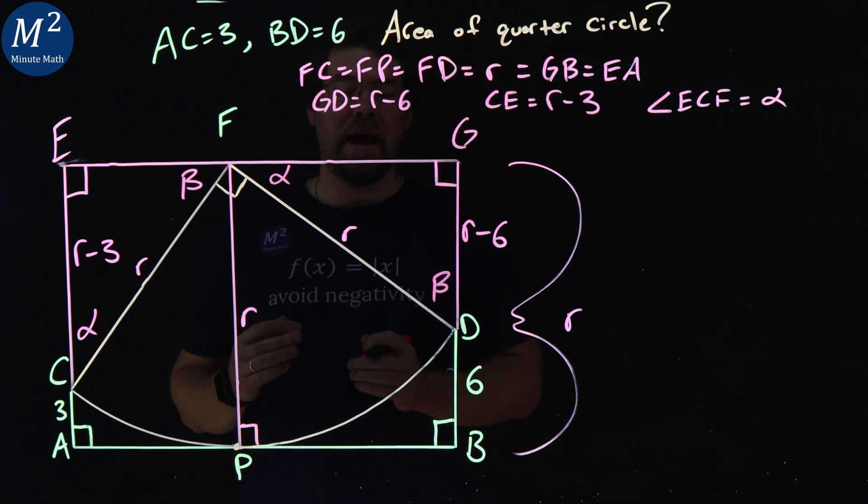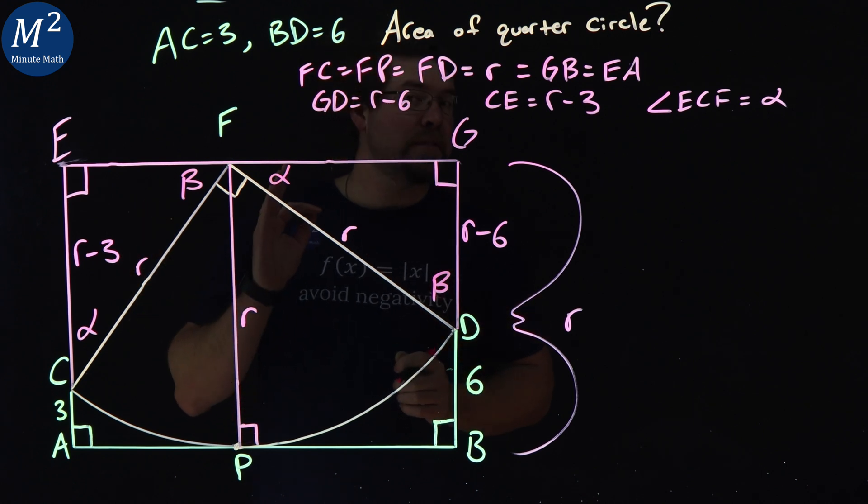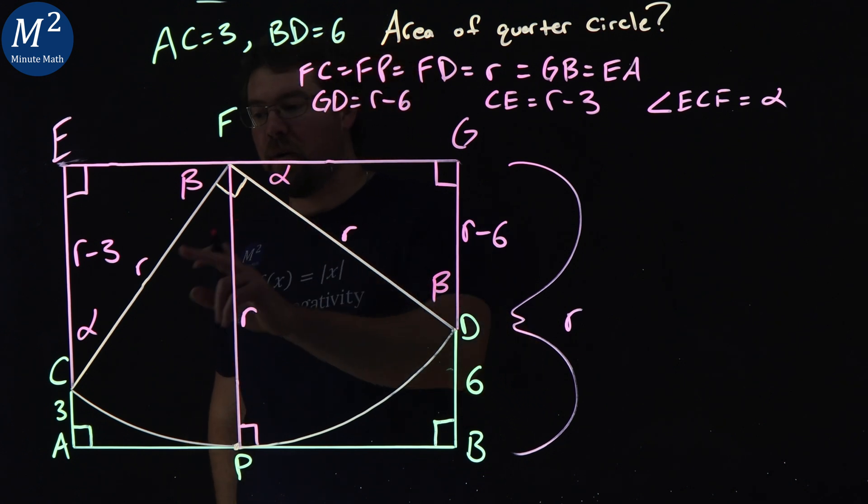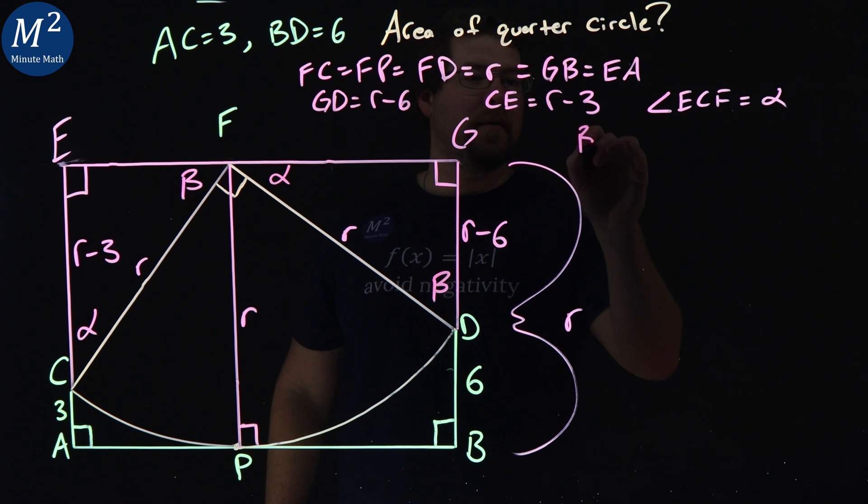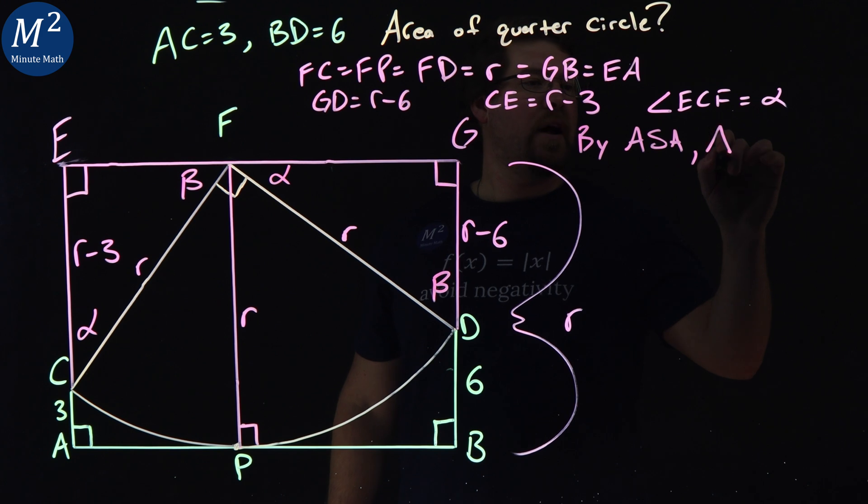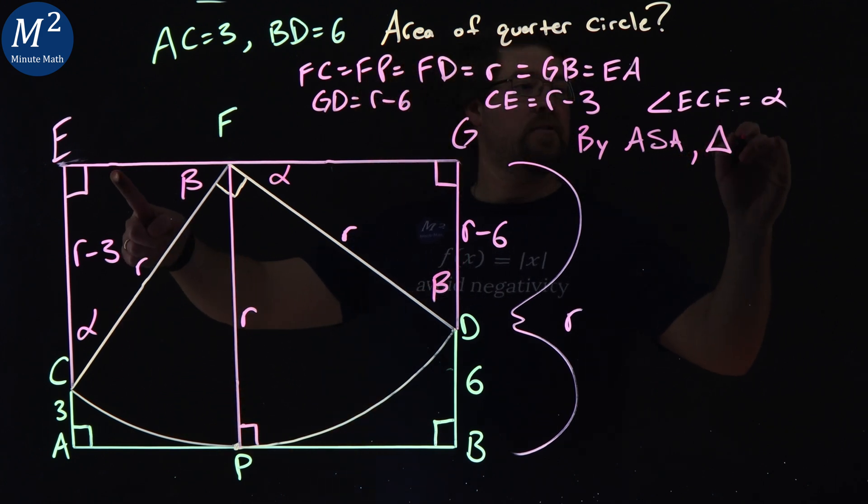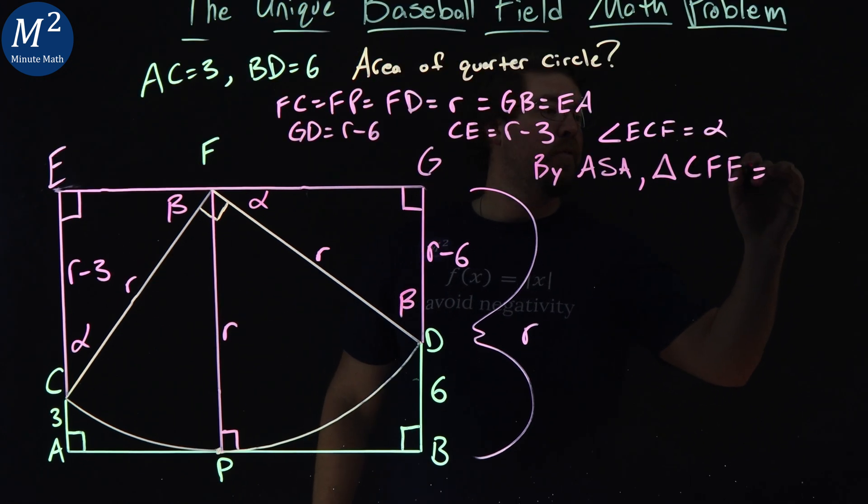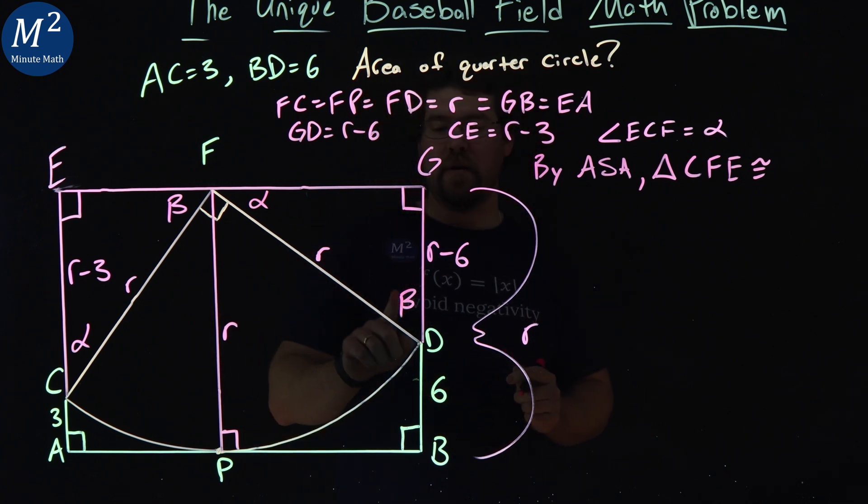And so now we have two triangles here that we can see, and they're not only similar, they're actually congruent by angle side angle, angle side angle theorem. So by angle side angle, triangle, let's keep it in order, go alpha, beta, right angle, triangle CFE is congruent to triangle, I went alpha, beta, 90, so FDG.